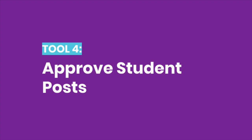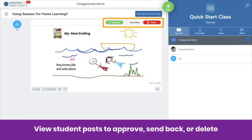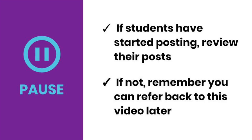Keep in mind that all student posts are approved by you, the teacher, before they're added to the class journal. Here's how the approval flow works: when students submit a post, you will see a red bar on the bottom of your screen. Click Review. You will see all posts that need approval. You can click on a post to view it, then decide if you want to approve, send back, or delete it. Pause the video now. If students have already started posting, approve their posts. If not, remember you can always refer back to this video later.